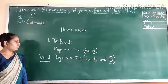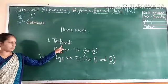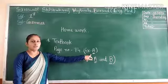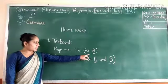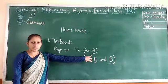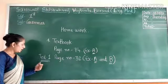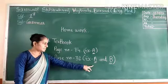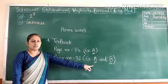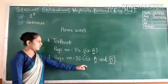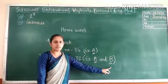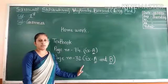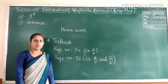For your homework, you have to write in your textbook: page number 74, Exercise A — circle the doing words. Then from Case 1, page number 32, Exercise A — underline the special names, and Exercise B — match the male naming words with the female naming words. These three exercises you have to write in your textbook. Thank you.